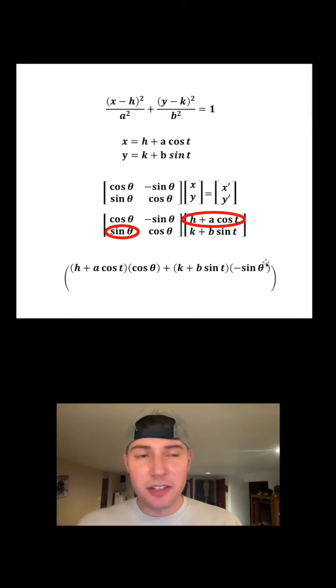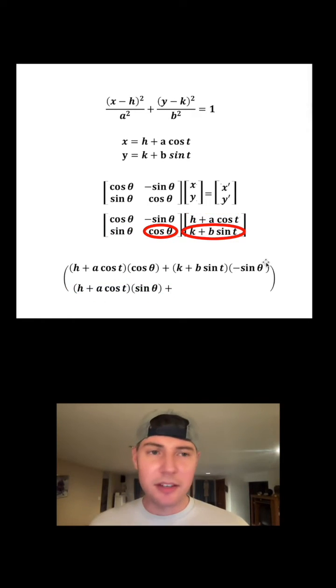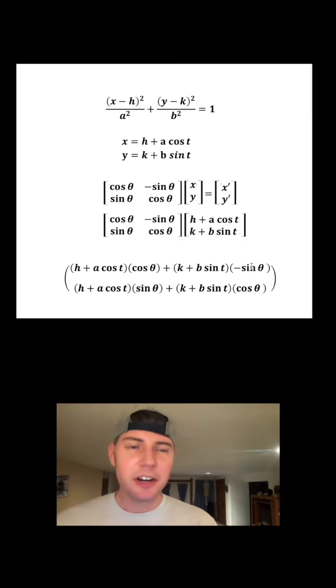Then to get the y prime, we're going to do this times this to go here. And then we're going to add to that this times this, which goes here. And here is our x prime y prime.